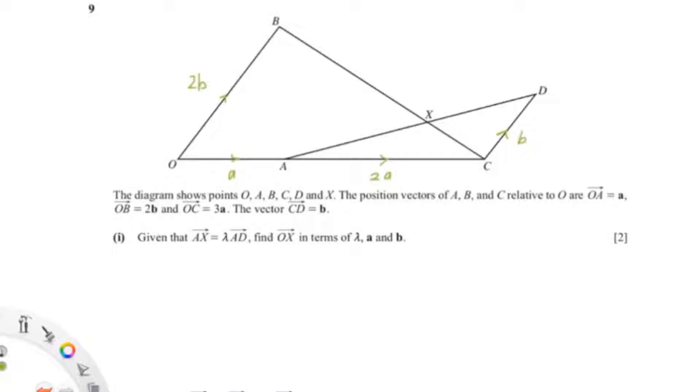The question wants us to find OX in terms of lambda A and B. So we know that AX equals to OX minus OA. We can just split AX.